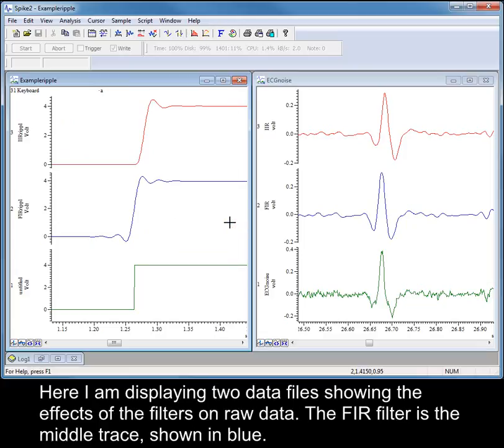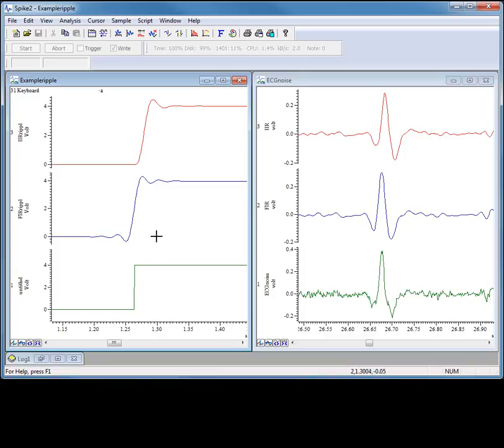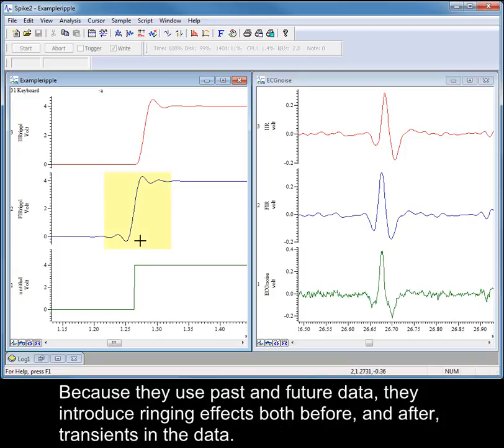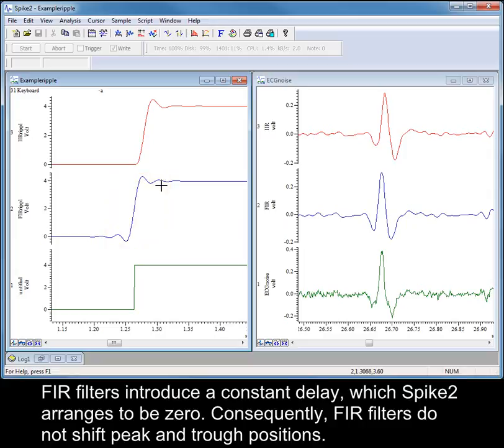Here I am displaying two data files showing the effects of the filters on raw data. FIR filters generate coefficients and use these to calculate the filtered output based on the data both before and after the current data point. Because they use past and future data, they introduce ringing effects both before and after transients in the data. FIR filters introduce a constant delay, which Spike2 arranges to be zero. Consequently, FIR filters do not shift peak and trough positions.